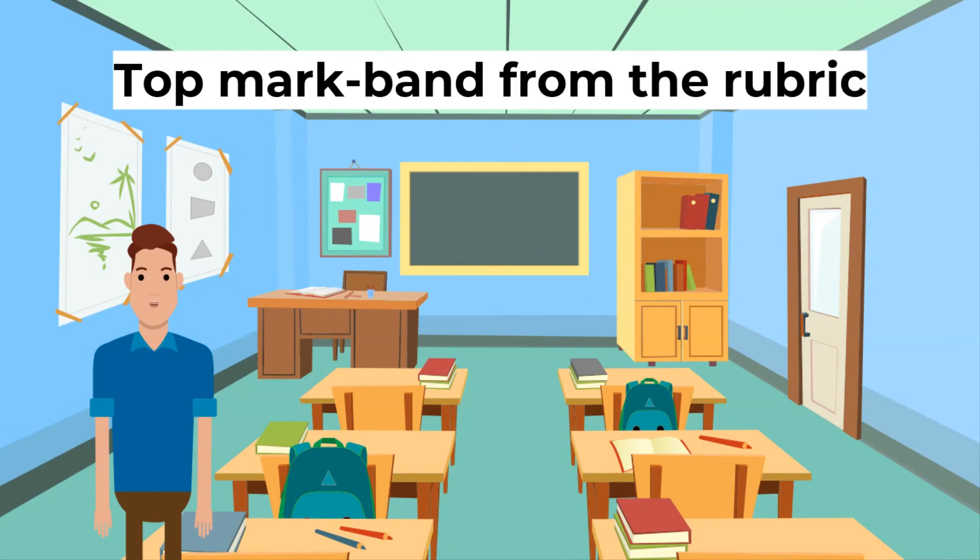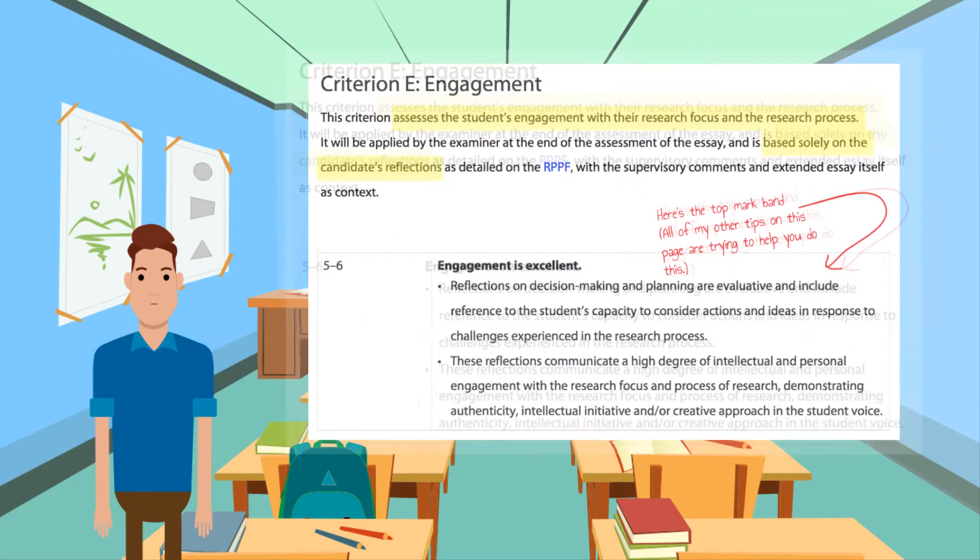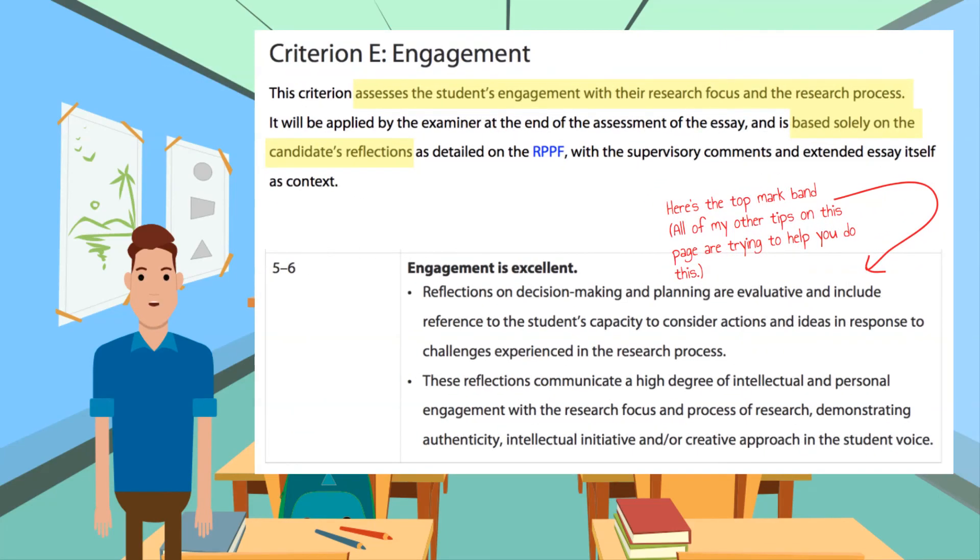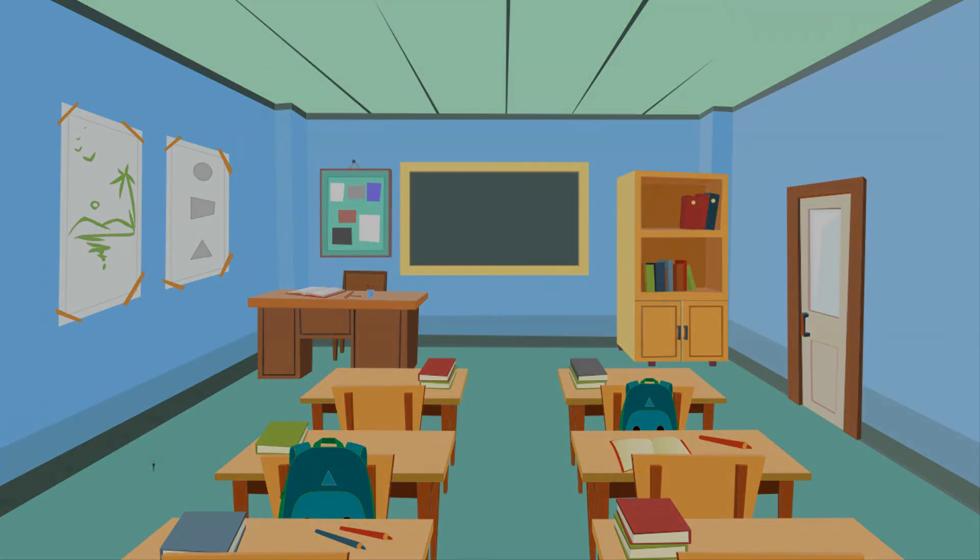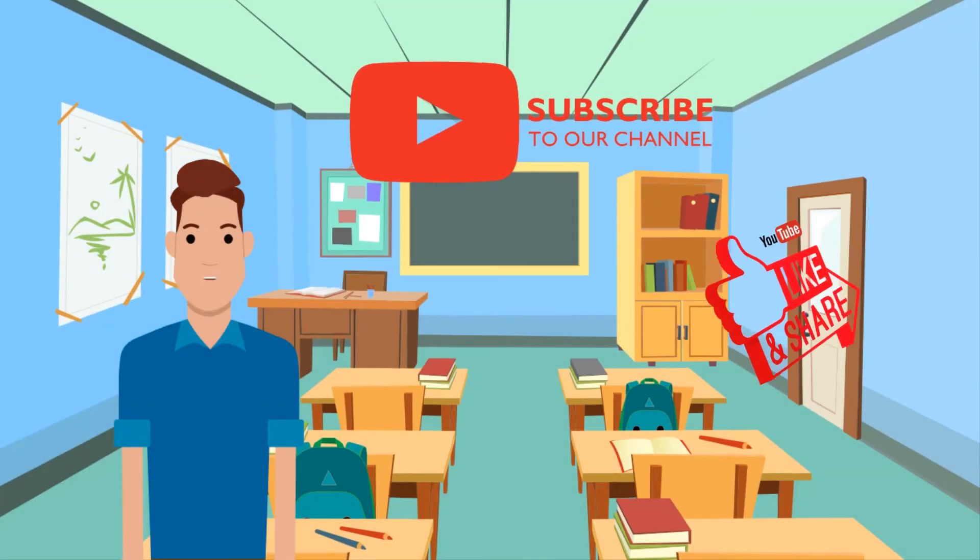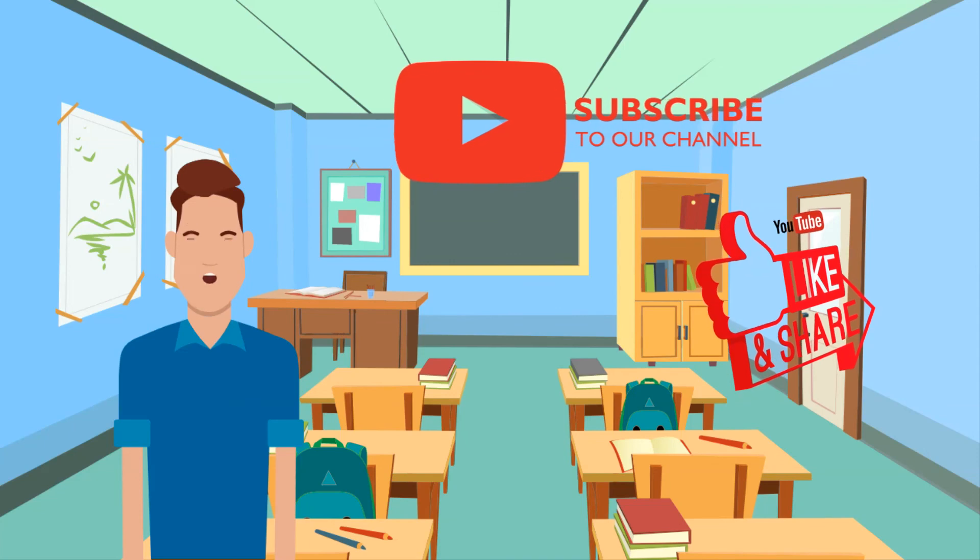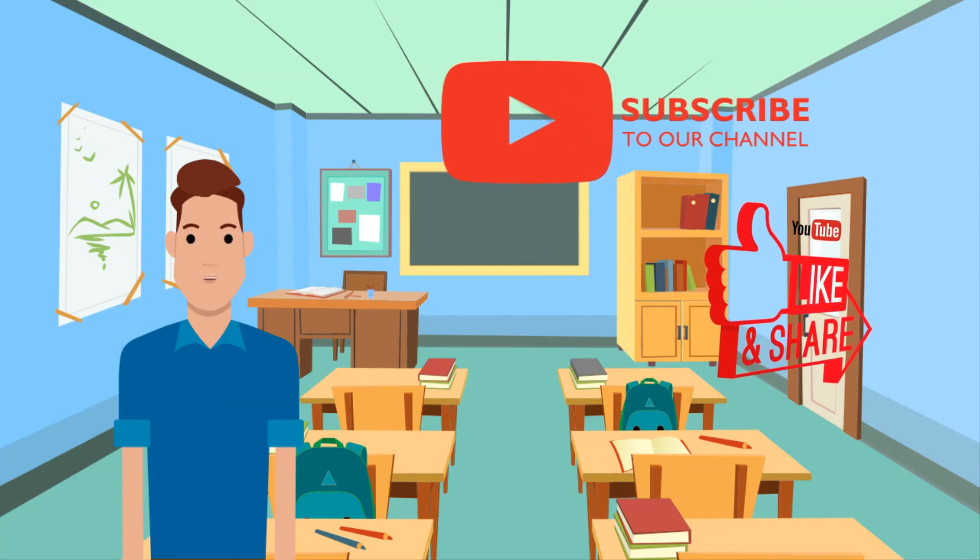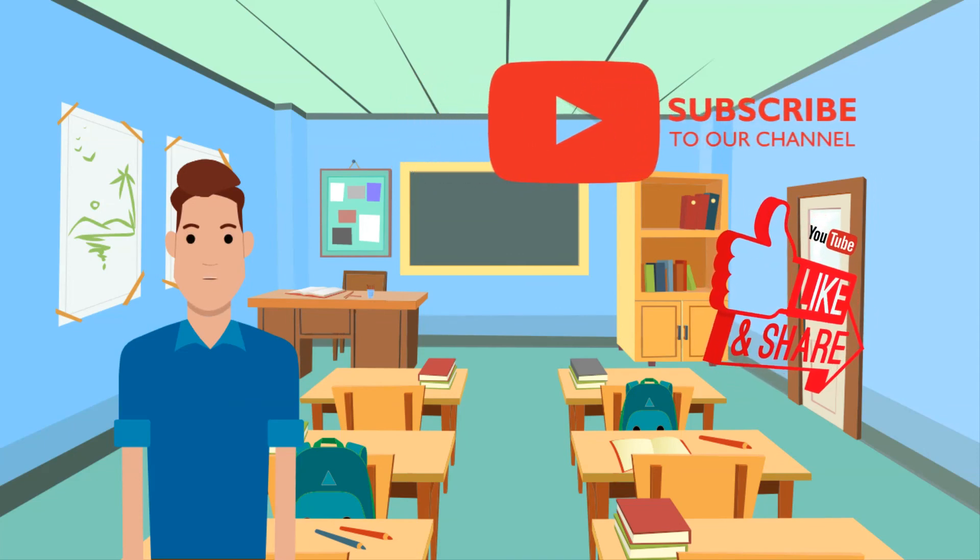Want to sneak a peek at the top mark band from the rubric? The rules that we have gone into here are my best thinking about how you can produce reflections that can be described by the top five to six mark band. It's worth having a look at the top mark band yourself - there is a link to this in the description below. Thank you for watching our video. Please like, subscribe, and share, and comment below so we can clarify things for you.